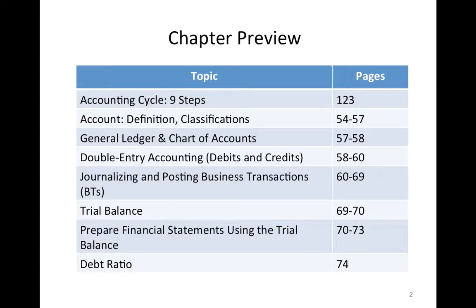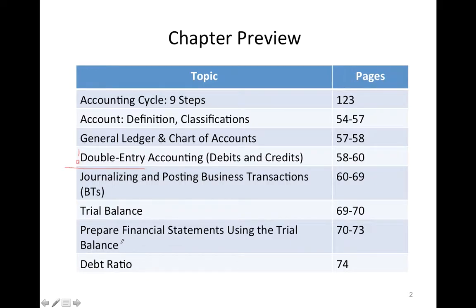I'm going to break this lecture into two components. In this first part, I'm going to talk about accounts — definition, classification of accounts, types of accounts, what financial statements they're reported on, the general ledger, and the chart of accounts rules. This is the core — the most important part of this chapter. We're going to learn double-entry accounting, T-accounts, debits, and credits. In the second part, I'll cover journalizing and posting business transactions, prepare a trial balance, briefly review the financial statements, and finish with the debt ratio.